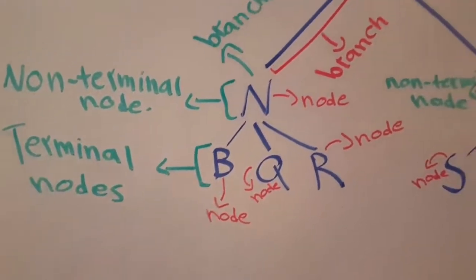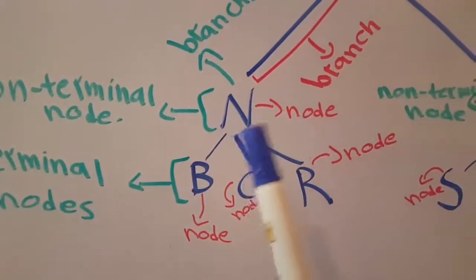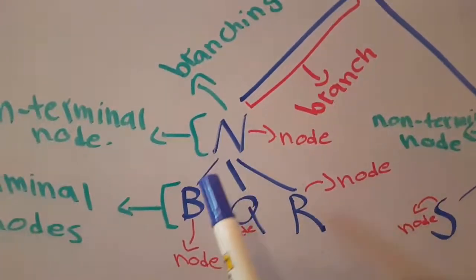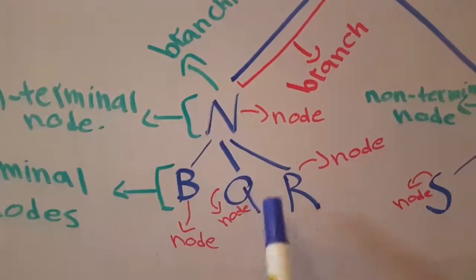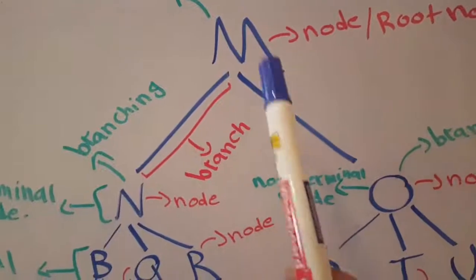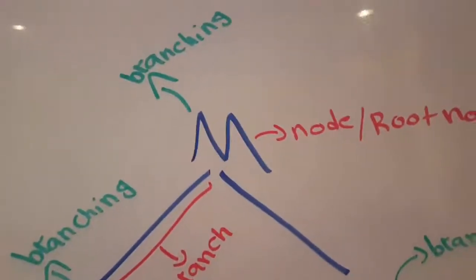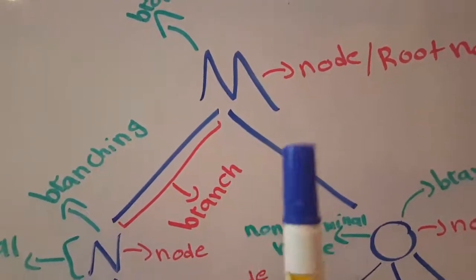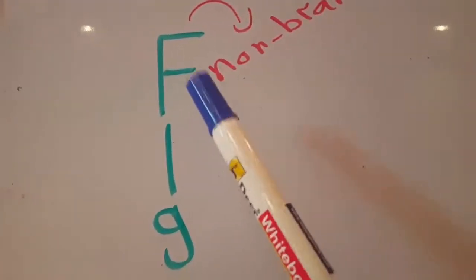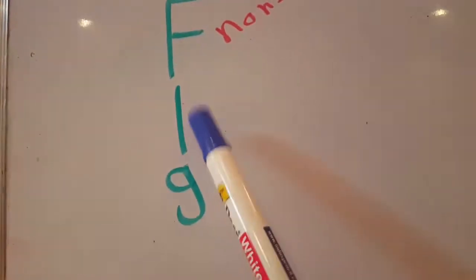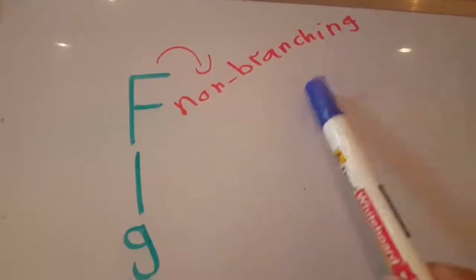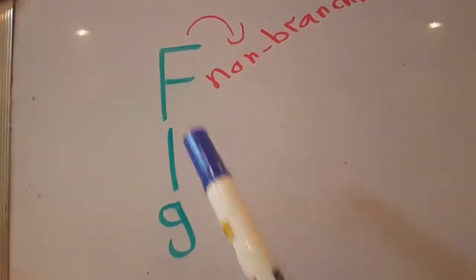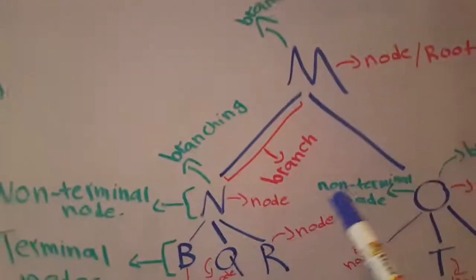The letter N is called branching because there are multiple branches going under it, and M is also called branching because multiple branches go under it. But there is also another situation called non-branching, where only a single branch goes under a letter. For example, the letter F has only the letter G going under it — a single branch — so I could call F non-branching.